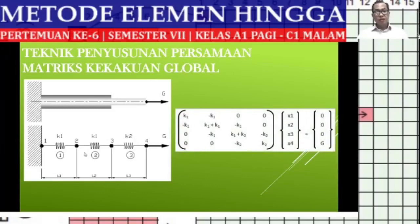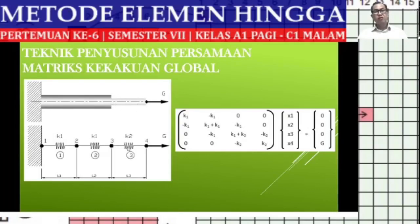We can easily arrange it as follows. Since the material is the same, the value of K for elements 1 and 2 is the same — both K1. While for the second object, since the material is different, the value of K is also different. So we arrange it: the first 2×2 matrix is K1, -K1, -K1, K1, then added with the second element: K1, -K1, -K1, K1. For the second element, K is K2, -K2, -K2, K2.